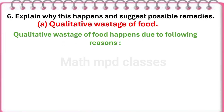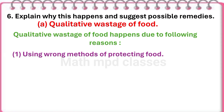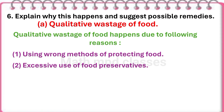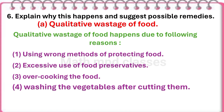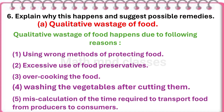Question number 6: Explain why this happens and suggest possible remedies. A: Qualitative wastage of food. Qualitative wastage of food happens due to the following reasons: first, using wrong methods of protecting food; second, excessive use of food preservatives; third, overcooking the food; fourth, washing the vegetables after cutting them; and fifth, miscalculations of time required to transport food from producer to consumers.